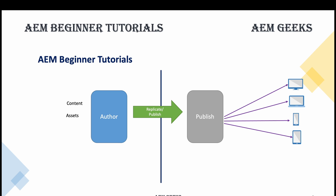To move content from author to publish, there must be a connection between these two instances — or more, if you have more than one publish instance. There must be a dedicated connection from your author instance to each publish instance. To handle this, we create replication agents. A replication agent is responsible for moving content from author to publish whenever you publish or activate a page or asset.